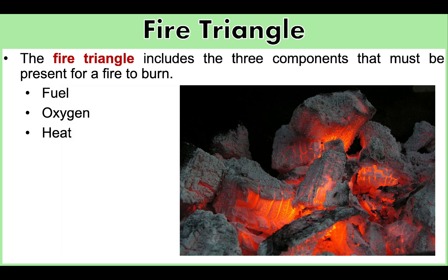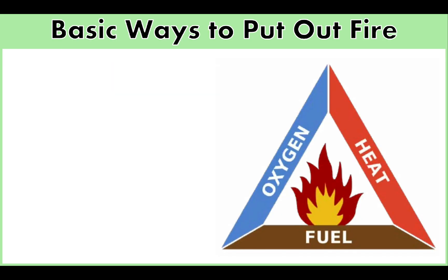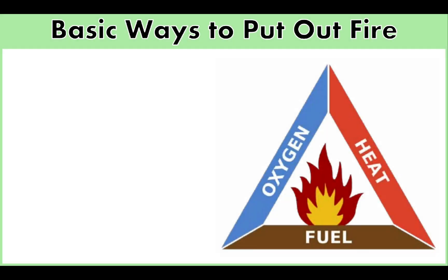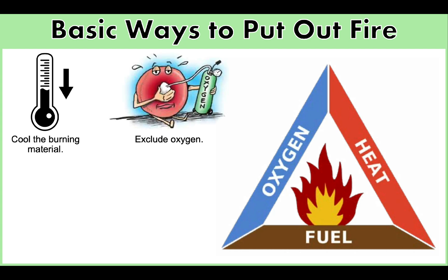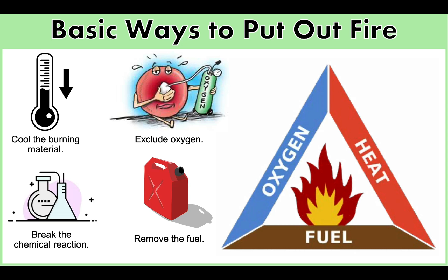There are four ways to put out a fire — basically, you just remove one of the components of the fire triangle. First, cool the burning material: lower its temperature so that it will not easily burn. Next, exclude oxygen by covering something that is burning — for example, cover a lit candle with a glass to exclude oxygen and the fire will eventually burn out. Then, remove the fuel. Finally, break the chemical reaction.